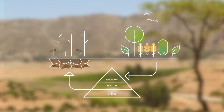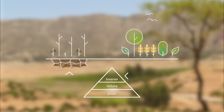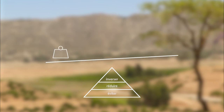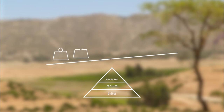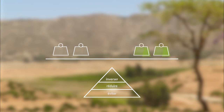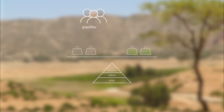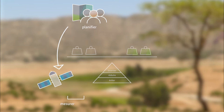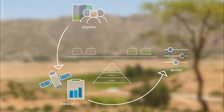Idéalement, la neutralité apporte un équilibre à l'utilisation des terres, de sorte qu'en termes nets, toute nouvelle dégradation sera contrebalancée par l'annulation de la dégradation passée. Parce que la neutralité en matière de dégradation des sols est un mécanisme de pilotage permanent qui nécessite une bonne combinaison d'actions, un processus continu de planification, de suivi et d'ajustement est nécessaire.